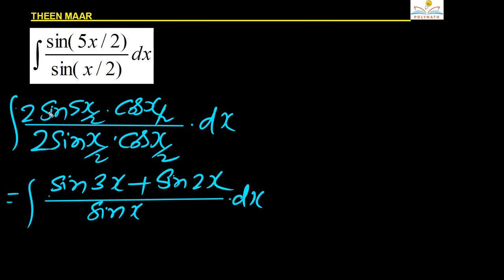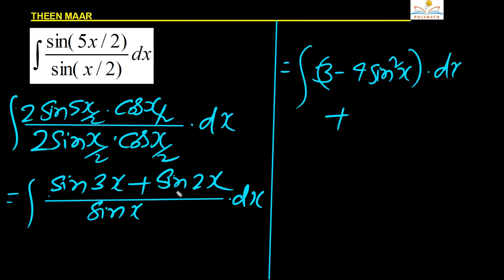Now if you apply sin 3x formula what happens you will be getting 3 sin x minus 4 sin cube x by sin x. Just to see this sin 3x formula: 3 sin x minus 4 sin cube x by sin x. And if you cancel off that sin x there it is nothing but 3 minus 4 sin square x. Similarly, the next part is integral of 2 sin x cos x by sin x and you will get 2 cos x remaining.